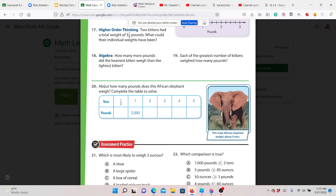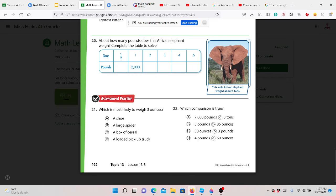I just completed number 20. Which is most likely to weigh three ounces? A box of cereal.